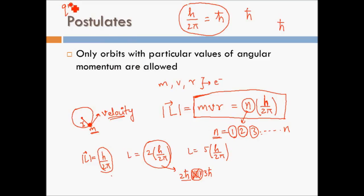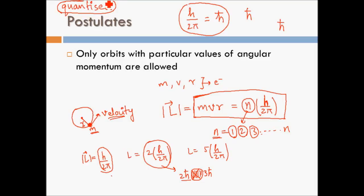In other words, according to Bohr the angular momentum of the electron is quantized. We already studied from Planck's quantum theory that quantized means a property takes only some discrete values and not all possible values. Since angular momentum can only take specific values, it is said to be quantized according to Neil Bohr.